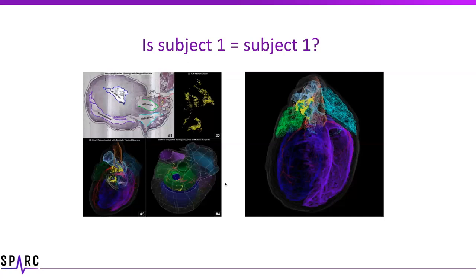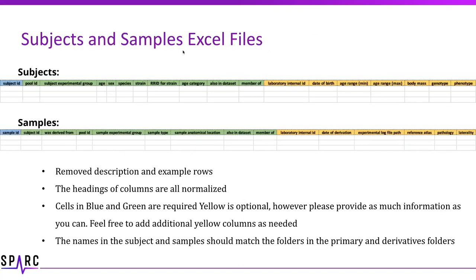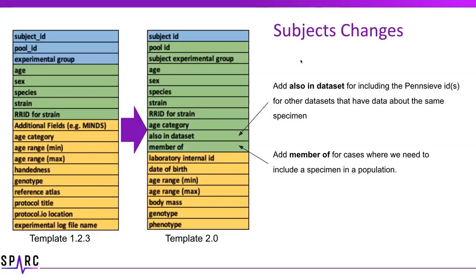Let me delve into this a little bit. Here are two wonderful datasets, and you can see there are some similarities — potentially the same or very similar subjects. But is subject one in this dataset the same as subject one in the other dataset? Subjects and samples Excel files — you are familiar with these — have required fields in green and optional fields in yellow. These are essentially the same as before. We removed some of the example rows as they were a little confusing, and the column headings have been normalized.